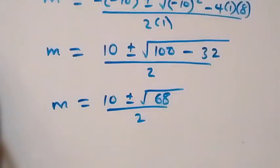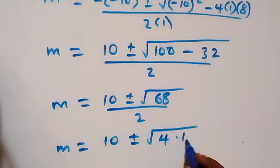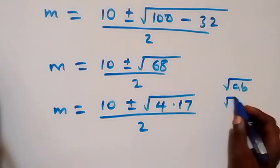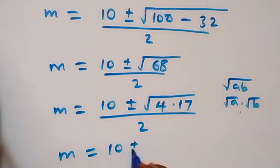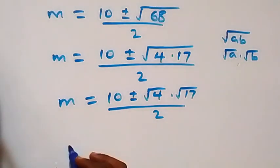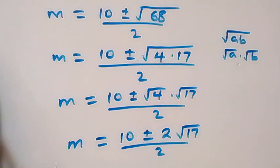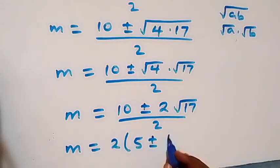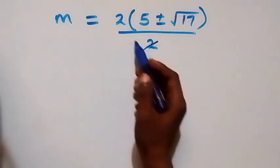We simplify: m equals 10 plus or minus square root of 68 over 2. Since 68 equals 4 times 17, we write square root of 68 as square root of 4 times square root of 17, which equals 2 root 17. So m equals 10 plus or minus 2 root 17, over 2. Factoring out 2 from the numerator: m equals 2 times bracket 5 plus or minus root 17, over 2.